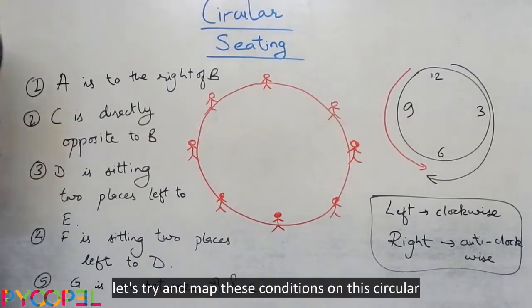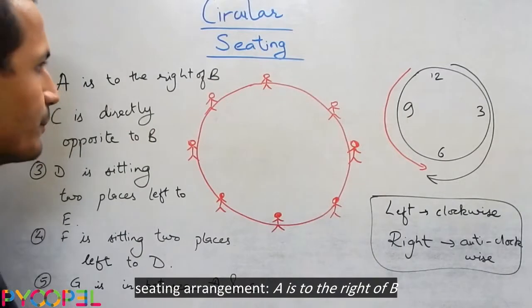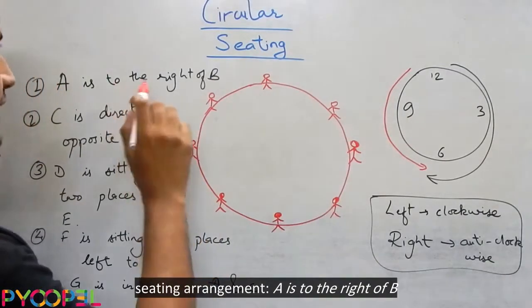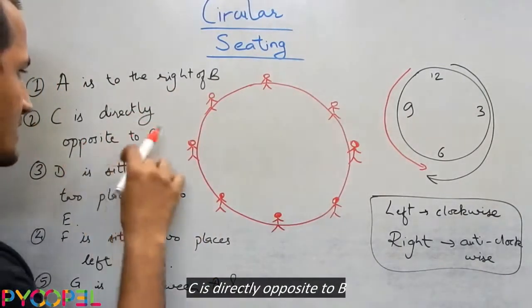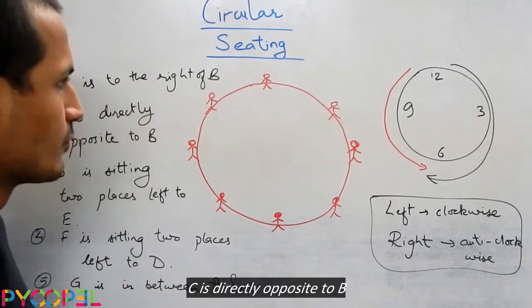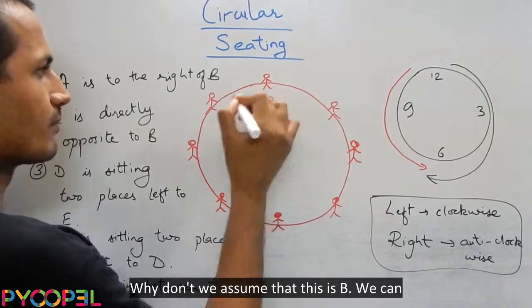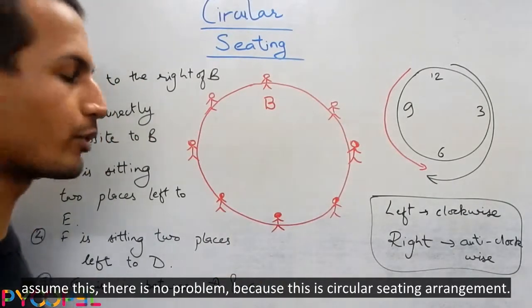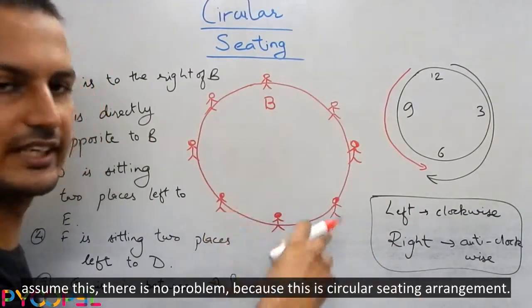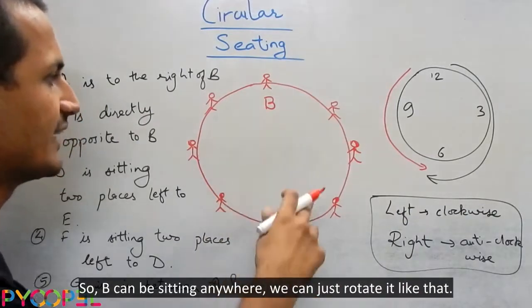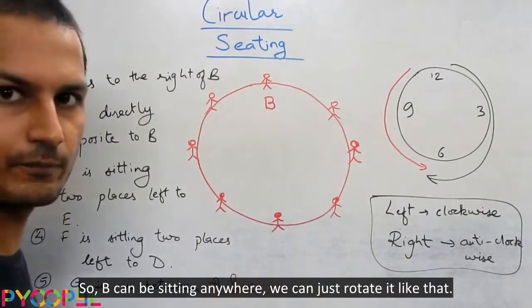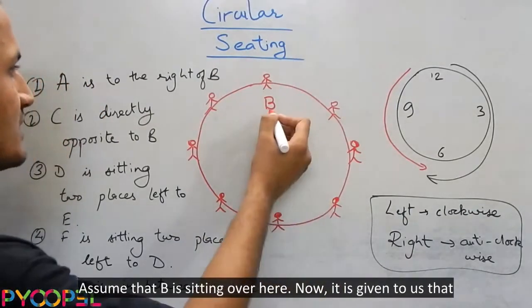Now, let us try and map these conditions on this circular seating arrangement. A is to the right of B, C is directly opposite to B. Why do not we assume that this is B? We can assume this, there is no problem because this is circular seating arrangement. So B can be sitting anywhere, we will just rotate it like that. Assume that B is sitting over here.